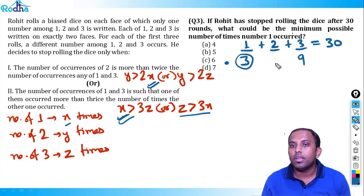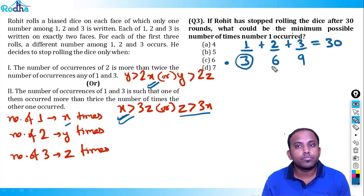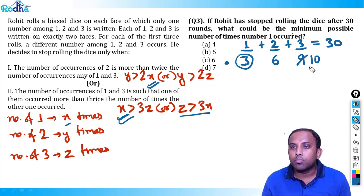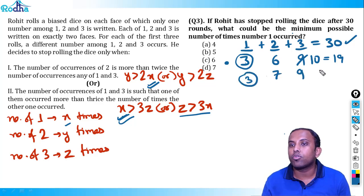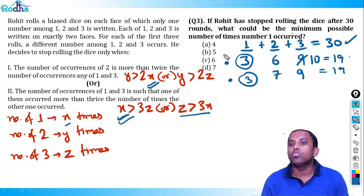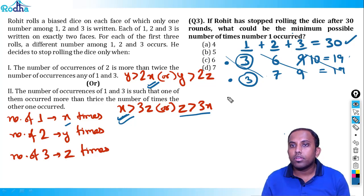From the first three rolls: 1 occurred once, 2 occurred once, and 3 occurred once. Then in the middle some rolls happen. At the last stage, 2 occurred consecutively 10 times. So total y (number of twos) is at least 1 + 10 = 11 (one from the initial roll plus 10 consecutive at the end).